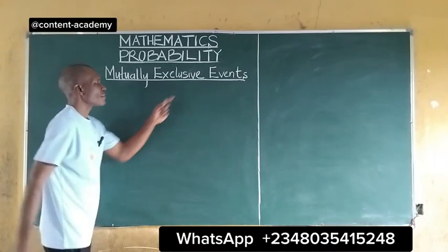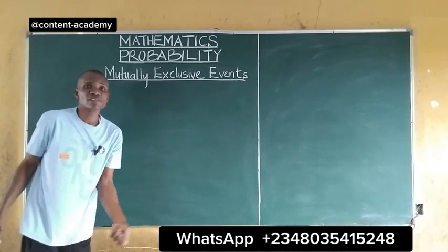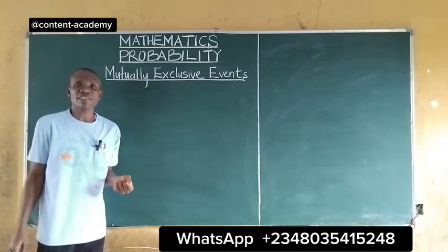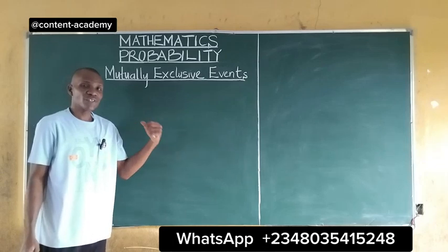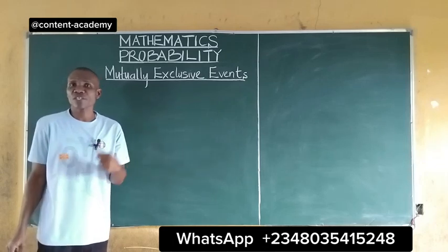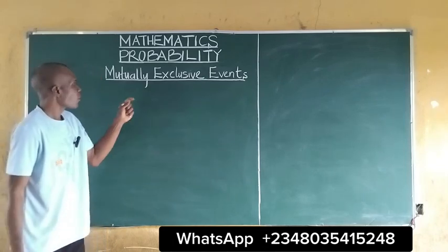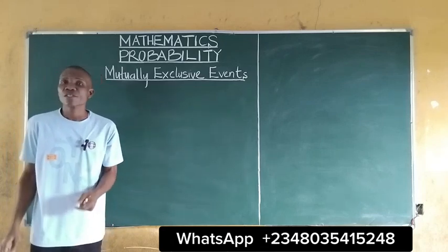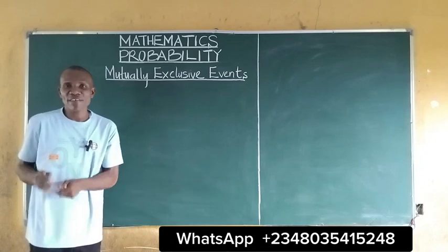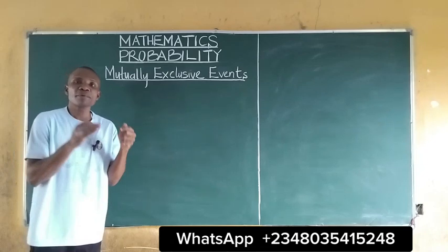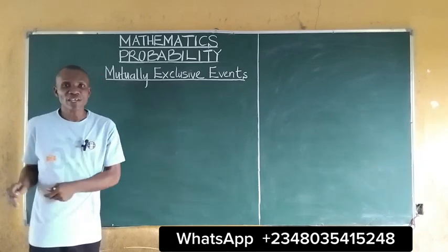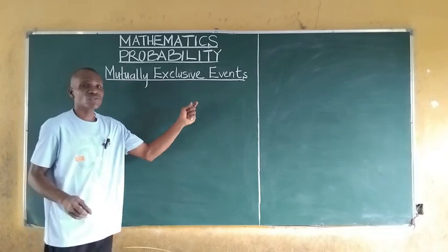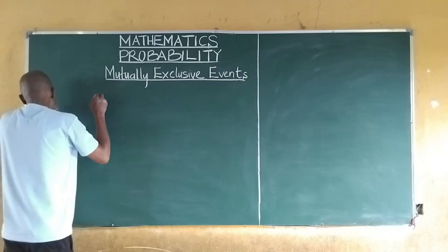Mutually exclusive events. They are also known as additional probability. What are mutually exclusive events in probability? It means when an event prevents the occurrence of another event. We call that event a mutually exclusive event.